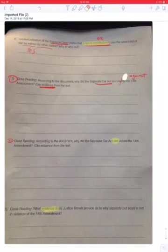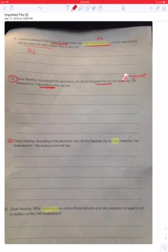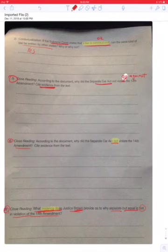This one says that this Separate Car Act does not violate, means goes against. And number four says why did this not go against the 14th Amendment? This one down here, it says evidence. What evidence does this guy Brown, Mr. Brown, Justice Brown, say that separate but equal does not go against? So what evidence does he use to say separate and equal is okay? That's the one about the schools. Okay?